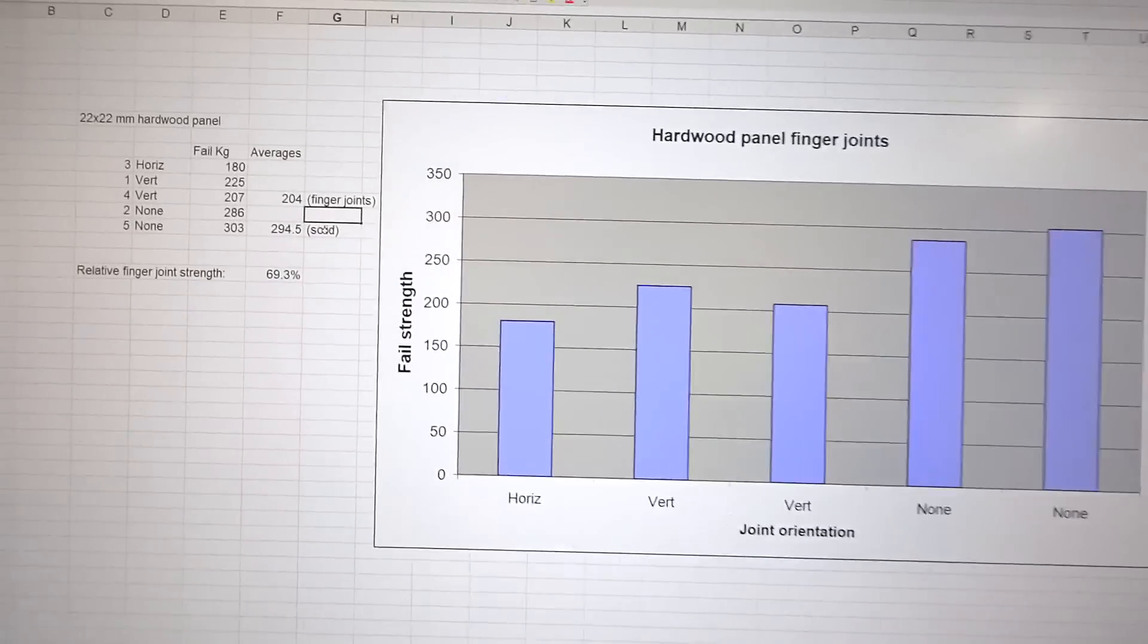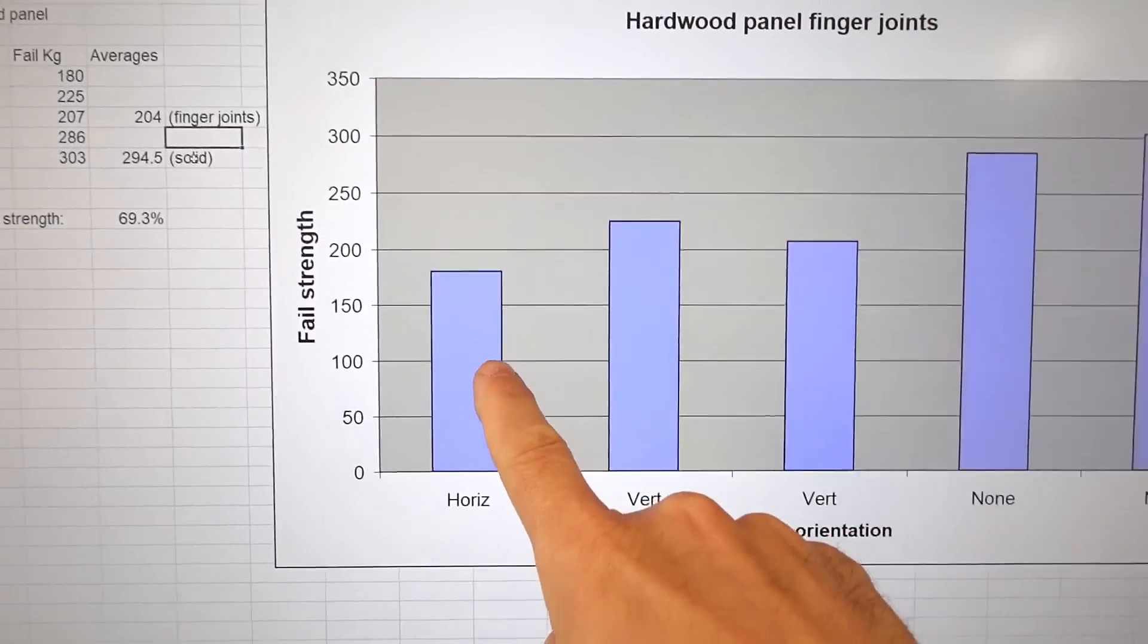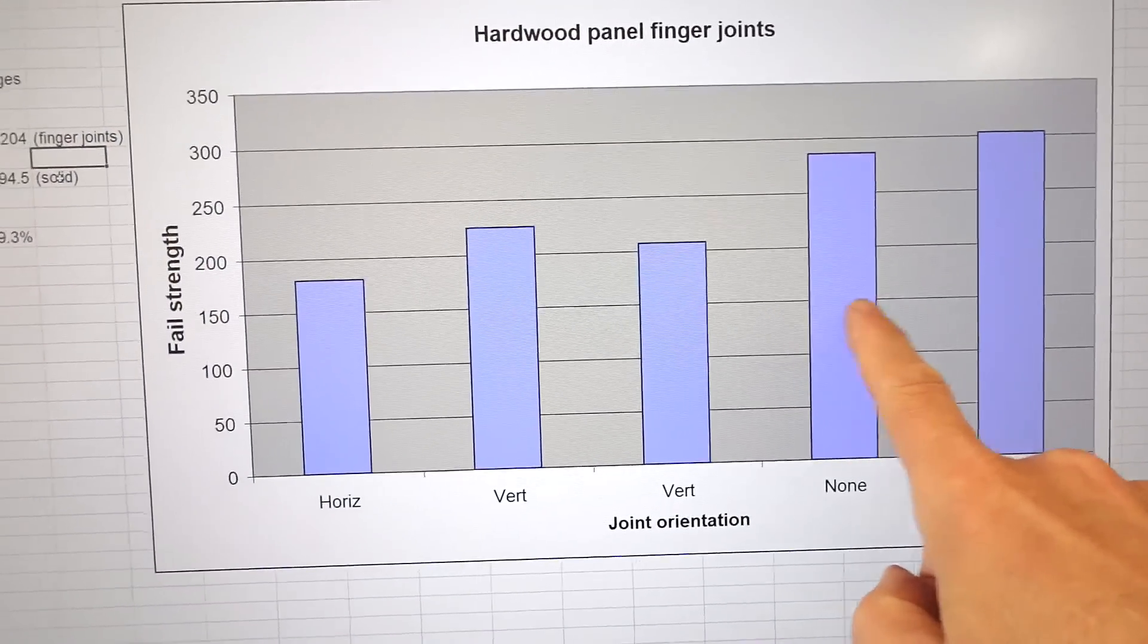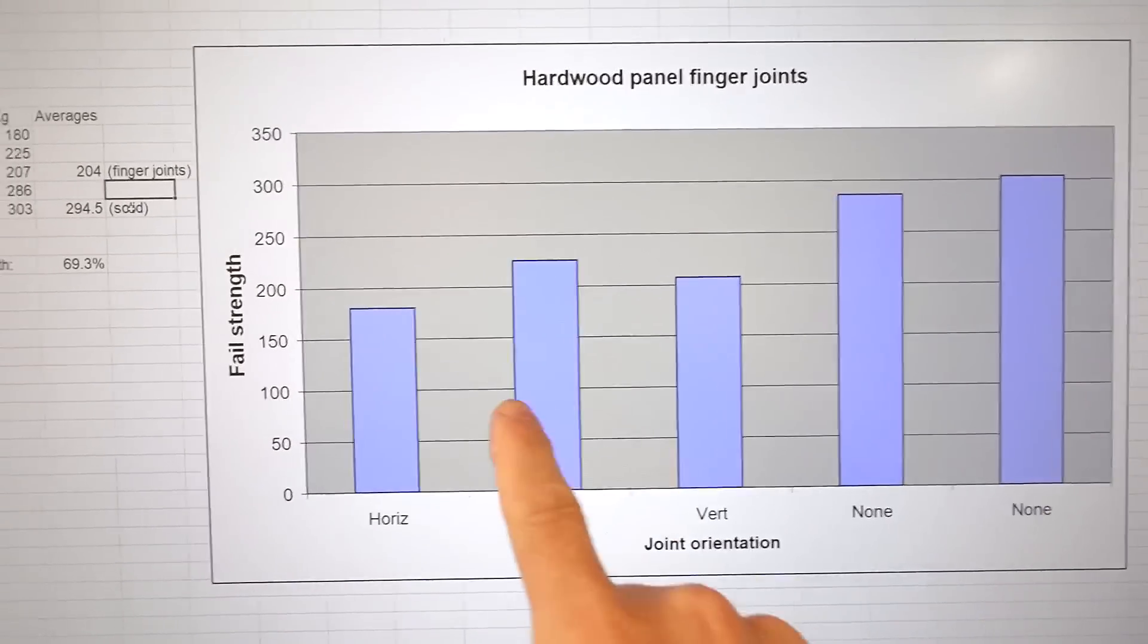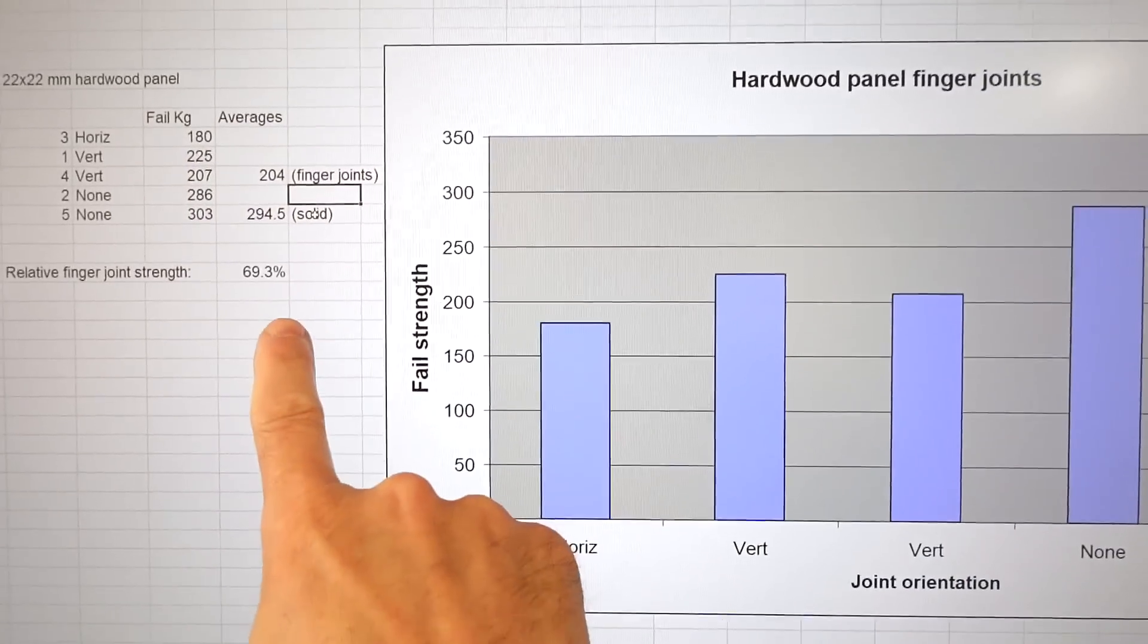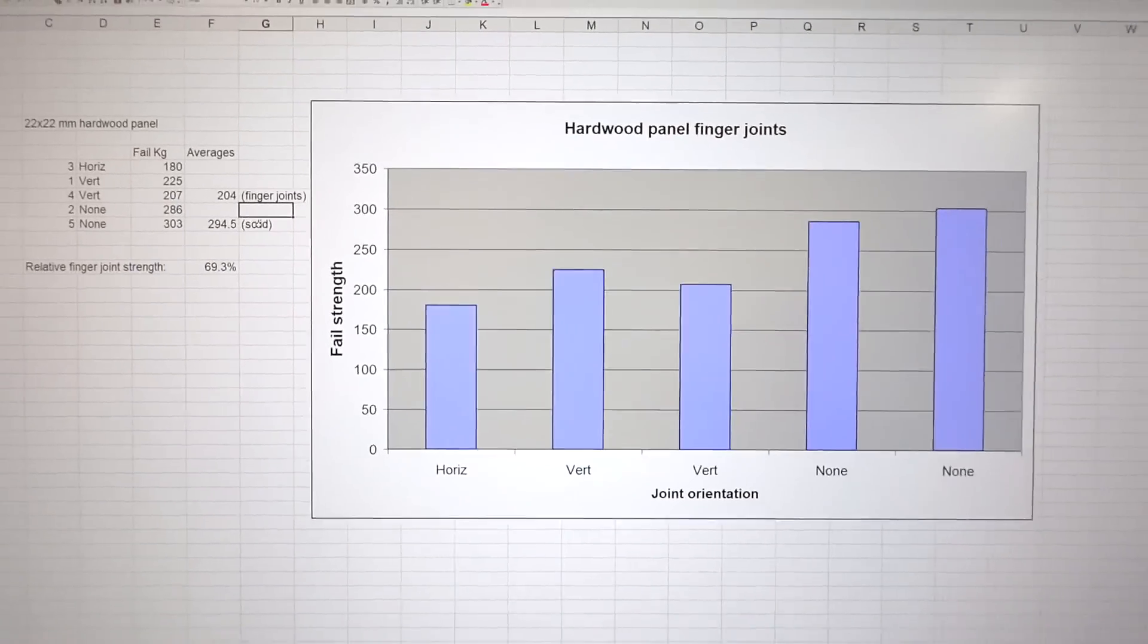I only did five breaks for this material, and this is the different orientations here. Solid was of course stronger, but on this one the joints were about 70% the strength of solid. That's more in line with my expectations.